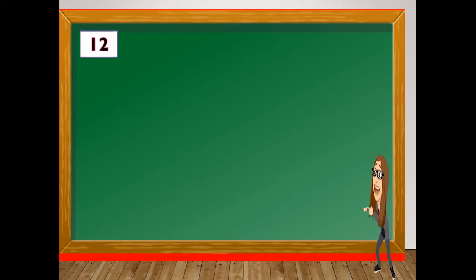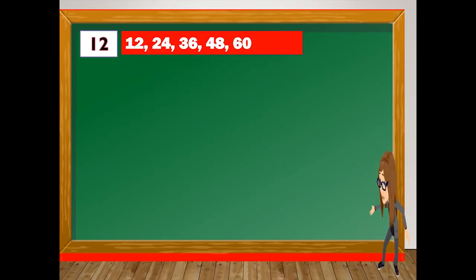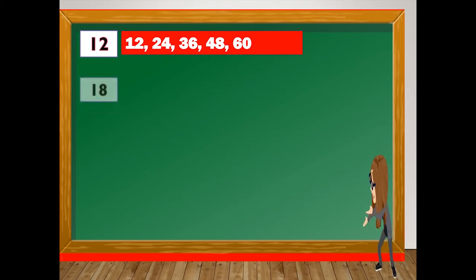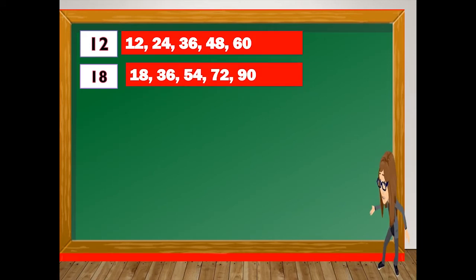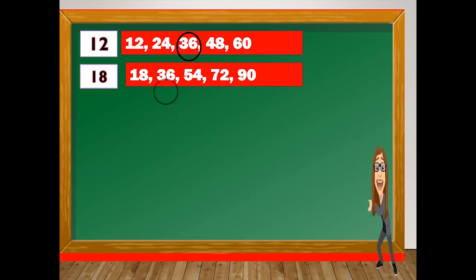Let us find the LCM of 12 and 18 using the listing method. For 12, we list: 12, 24, 36, 48, and 60. For 18, we have: 18, 36, 54, 72, and 90. We have a common number — that is 36.